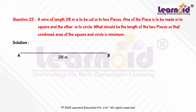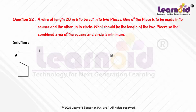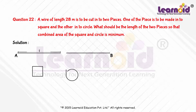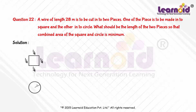The length of the wire is 28 meters. Let a piece of length L be cut from the given wire to make a square. Then the other piece of wire used to make a circle will be 28 minus L meters. Now, the side of the square is equal to L by 4, and the area of the square is equal to (L/4)² which is equal to L² by 16.